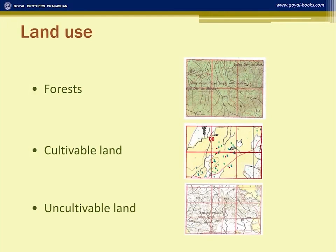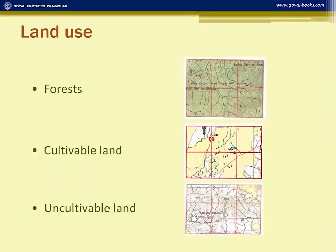Generally, the occupation of people in a cultivable area is cultivation. Uncultivable land is always shown in white, where you will find open scrub, rock outcrop, and stony land — all indicating the area is dry and uncultivable. Forest land signifies forestry — collection of fruits and cutting of wood. Open scrub with small bushes indicates sheep and goat rearing.